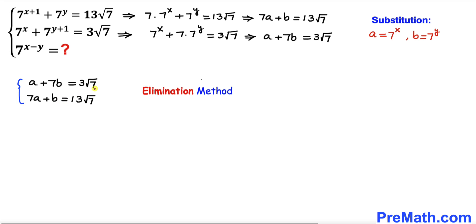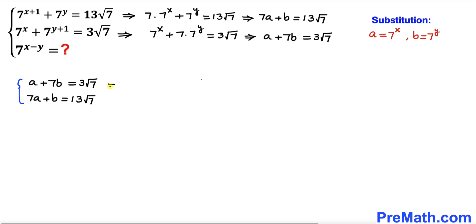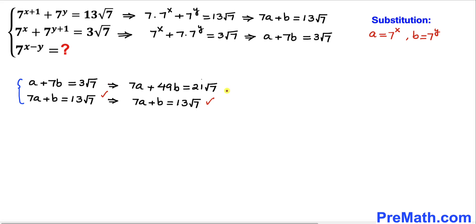We are going to solve this system using the elimination method. We multiply the first equation by 7, giving us 49a + 7b = 91√7. We keep the second equation as it is, then subtract the second equation from the first.